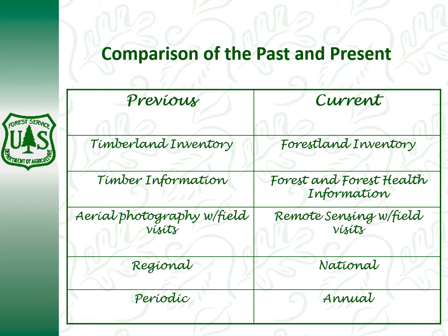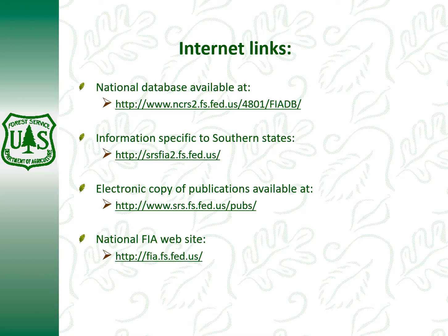Comparing past and present — the previous surveys were only looking at timber land, whereas now they're looking at all types of forest land. Before they were just looking at basic timber information — timber volumes, growth rates, those sorts of things. Now they're looking at forest and forest health information. The old method was done with aerial photography with field visits, and now it's remote sensing with field visits. And they moved from the periodic to the annual system. The Southern Research Station out of Knoxville is the group you deal with when dealing with FIA data primarily, and in the lab part we'll take a look at that.